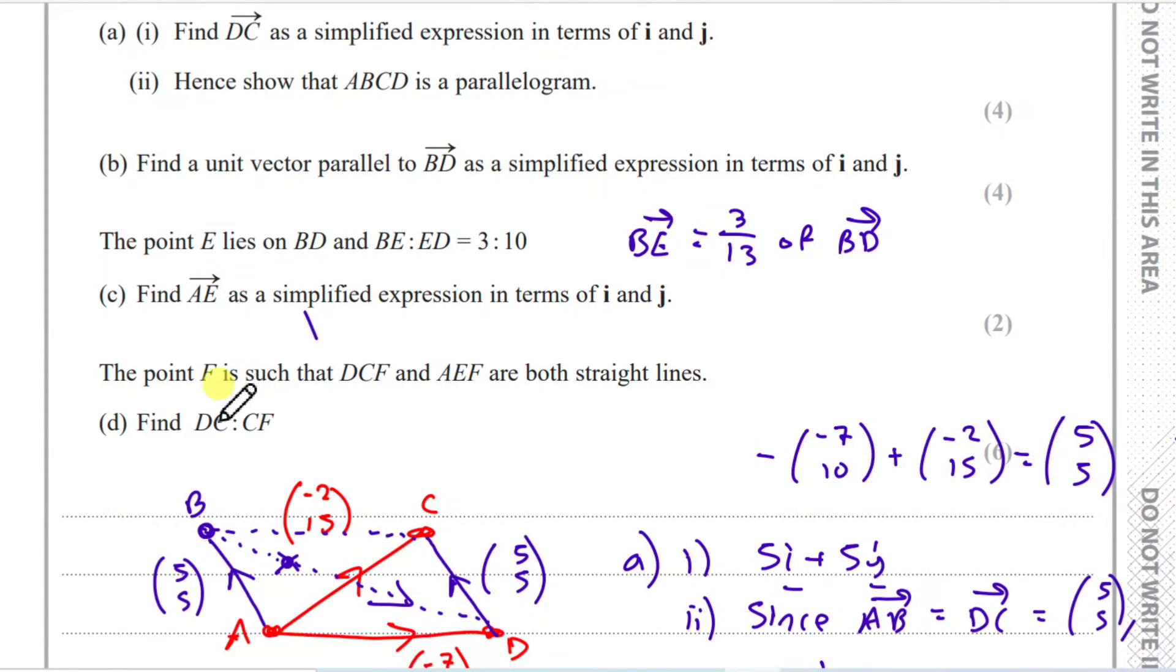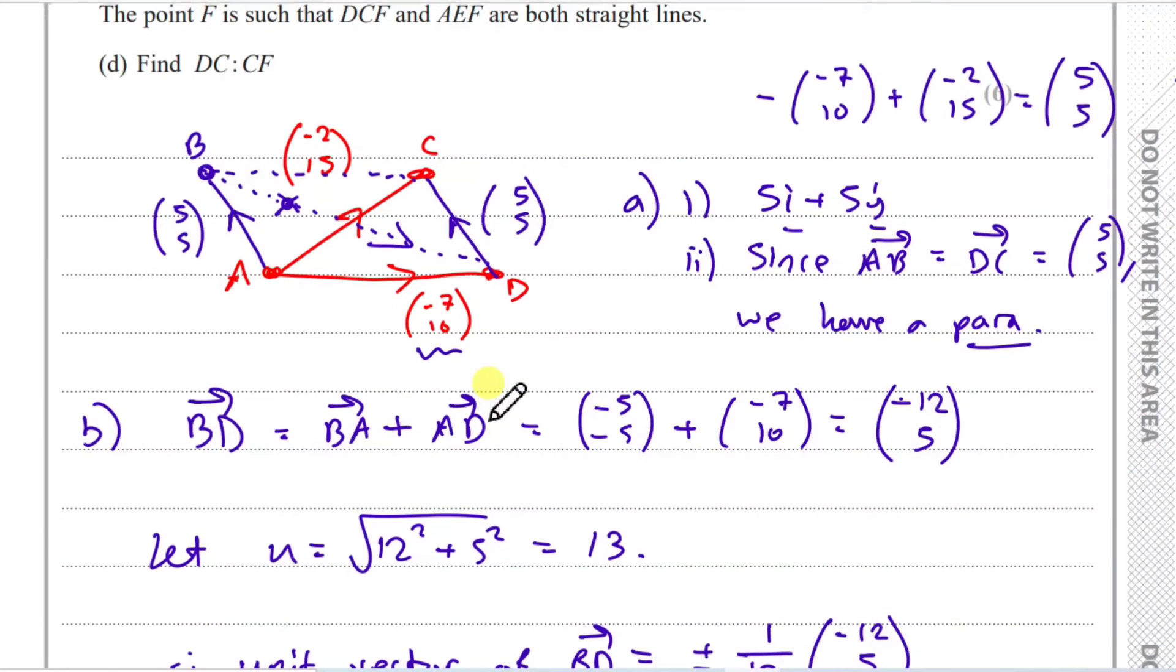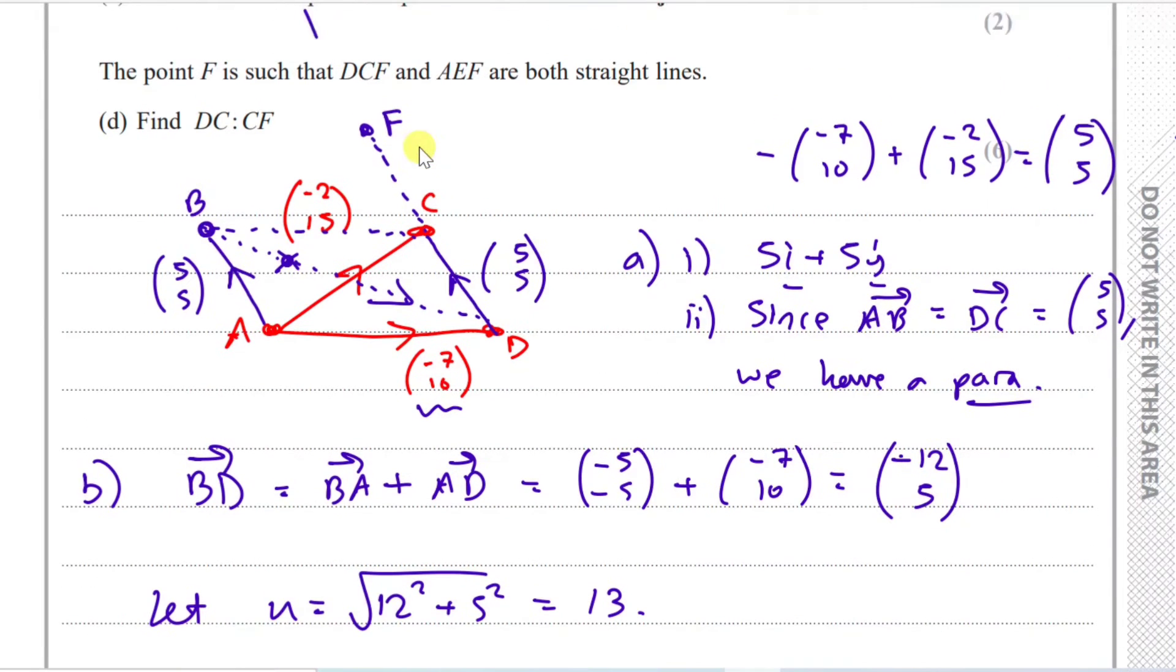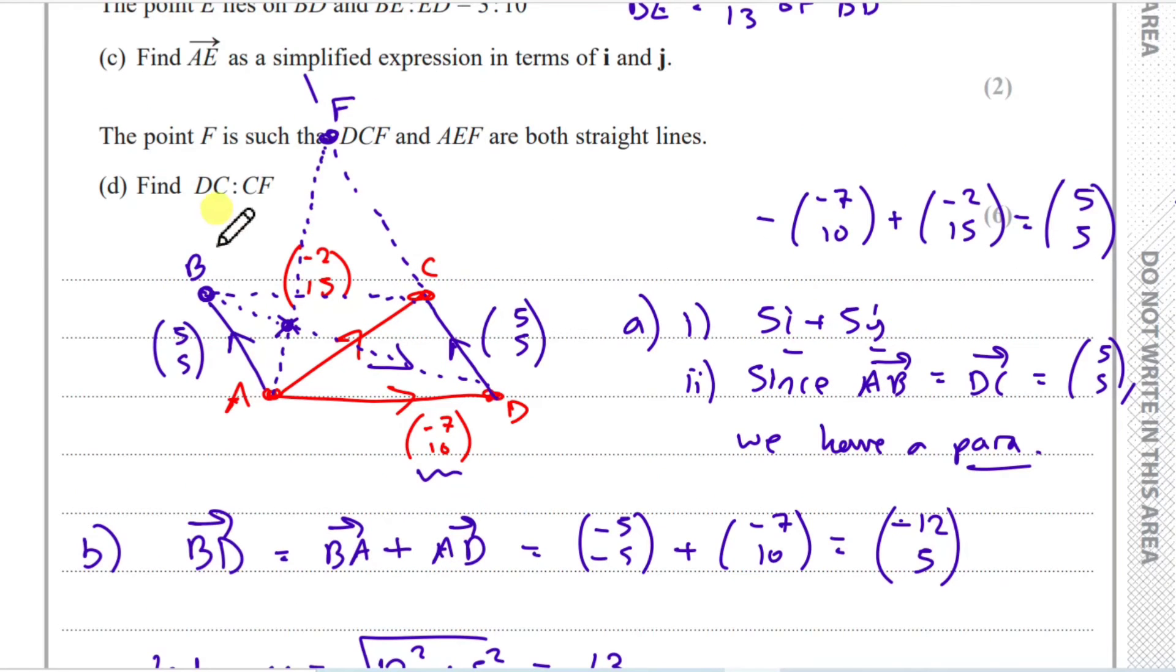And so the last one, part D, it says the point F is such that DCF and AEF are both straight lines. This is a 6 mark. DCF and AEF are both straight lines. So let's understand that. DCF, so it's going to be an extension, DCF. And then AEF. So they're going to probably intersect at that point. This is the visual understanding of that. So I put F up here. The best way to solve these kind of problems when you've got like ratio vectors is to basically treat the line like DF and AF as an extension of AE and DC here.